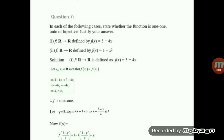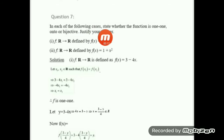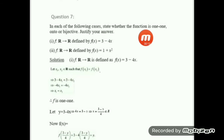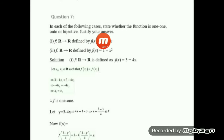Hello students. In this video I will give you the solution of question number 7 of exercise 1.2. Your question is: in each of the following cases, state whether the function is one-to-one, onto, or bijective, and justify your answer.